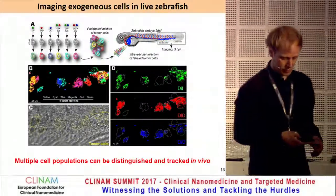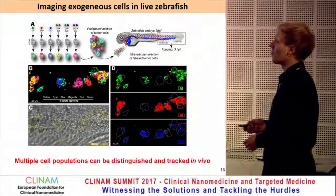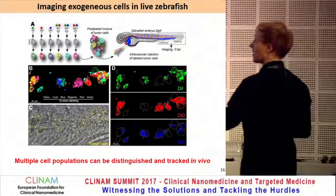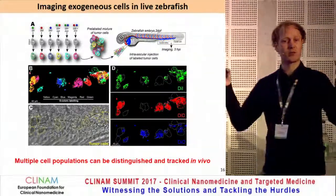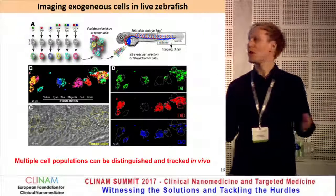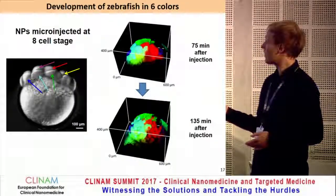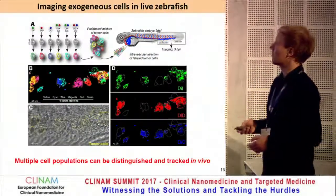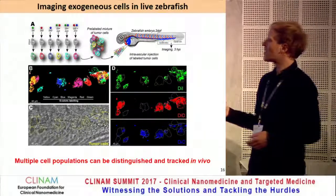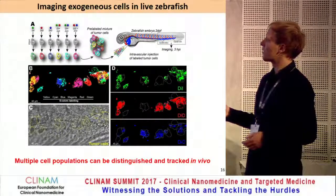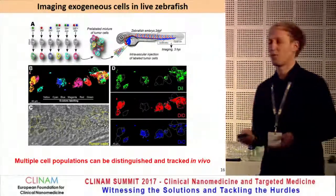We then went further and tried if this works also in vivo. We labeled different cell populations with different colors, mixed them, and injected them into live zebrafish. This allowed us to distinguish these different cell populations also in the living zebrafish.